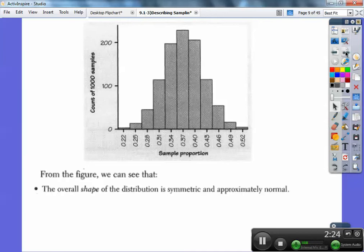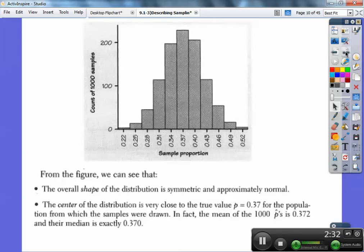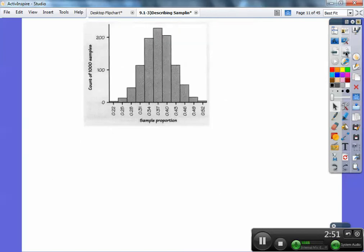From the figure we can see that the overall shape and distribution is symmetrical and approximately normal. That's pretty gosh darn bell-shaped. The center of the distribution is very close to the true population proportion of 37%. In fact, the mean of those thousands of P hat is 0.372, and their median is exactly 0.370.